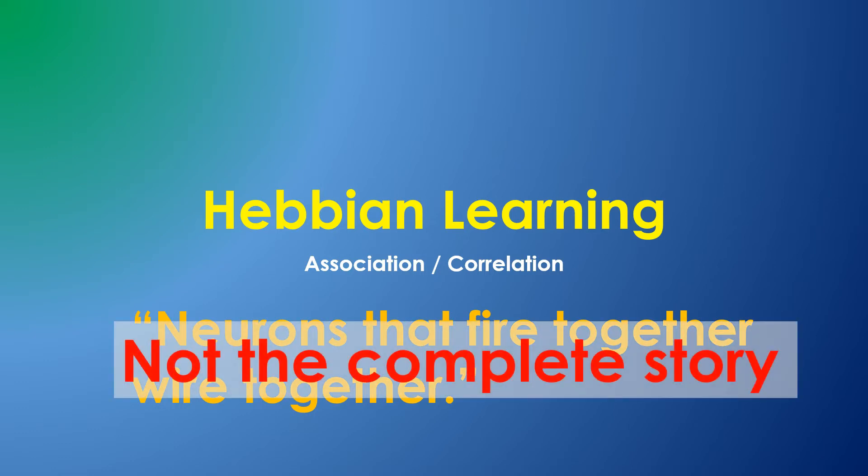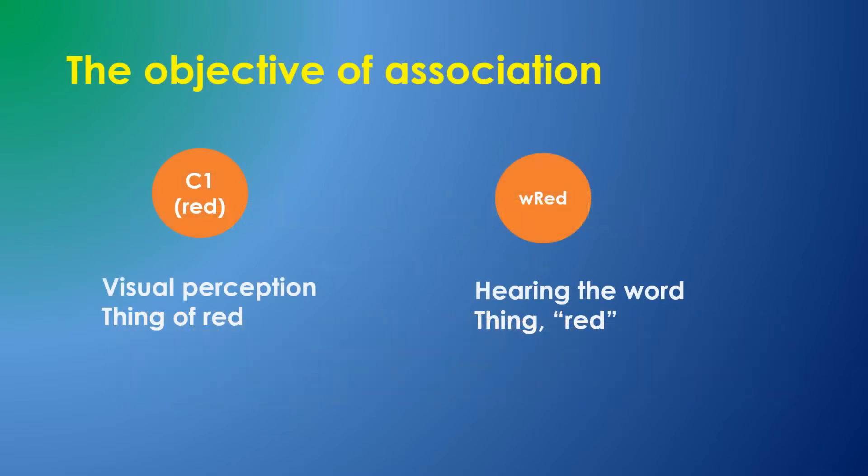Remember to consider this as just one piece of the learning puzzle. Let's consider the example of two knowledge store things: one firing when Sally sees something red, and another firing when she hears the word 'red.' The learning task is to create links between these two things. With these links in place, when Sally sees something red she can say the word 'red,' and when she hears the word 'red' she can recall objects with that color.